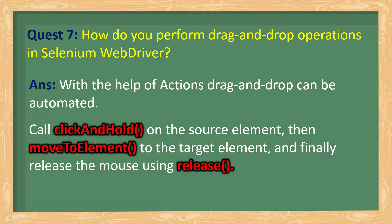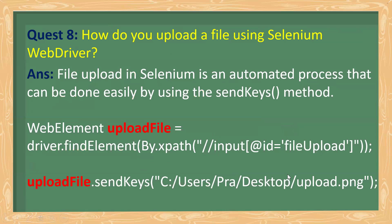How do you perform drag and drop operations in Selenium? Using the Actions class, call the dragAndDrop method, which allows you to automate it directly. Alternatively, you can call clickAndHold on the source element, then moveToElement on the target area, and finally release the mouse using the release function. You can use the dragAndDrop method directly or use these three functions in sequence to simulate drag and drop.